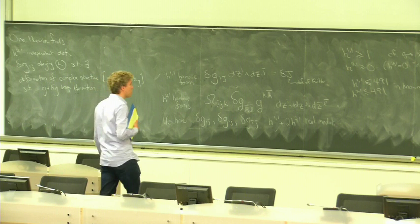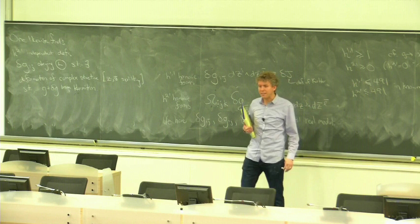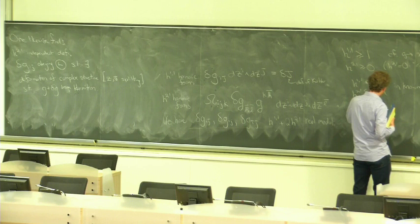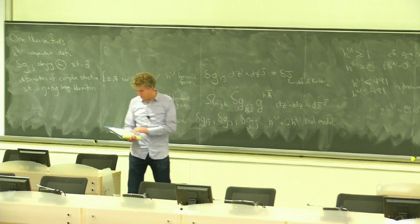A hard question — one we're working on as a research problem — is what should you think of as the typical values? We don't know the complete set of Calabi-Yau threefolds, but if you poke around in known classes, it's reasonable to think that H^{1,1} and H^{2,1} are very roughly of order 100 much of the time — 10, 100, 400, or something like that.